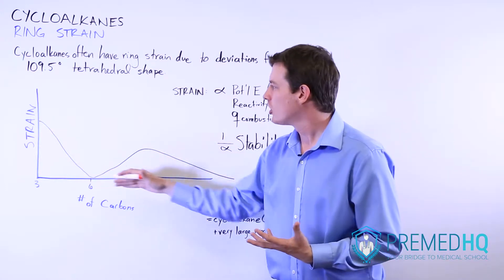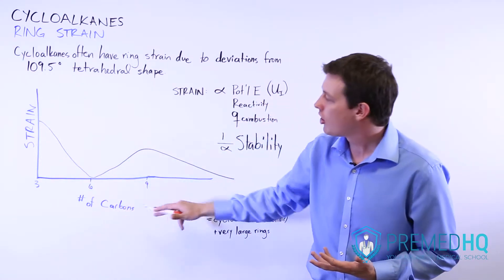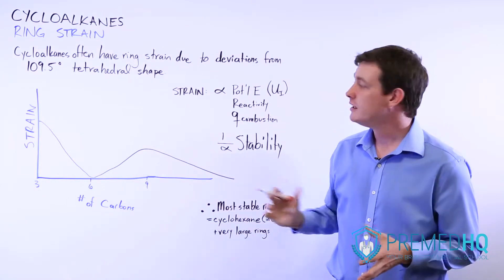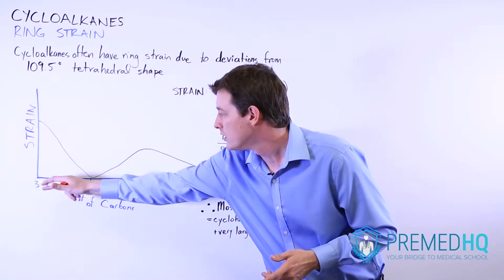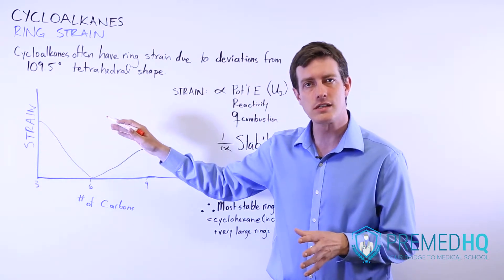We can look at this chart here and see the degree of strain and the number of carbons present within your ring. Notice that cyclopropane, a three-membered ring, has very high ring strain and it's fairly unstable.